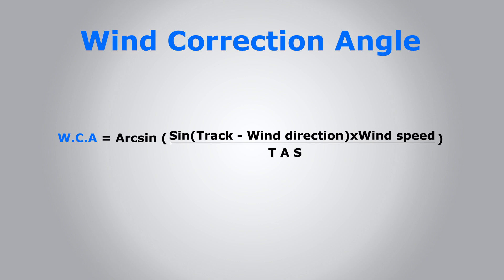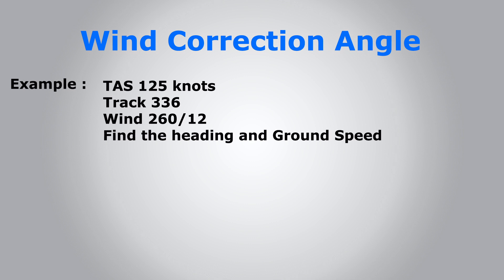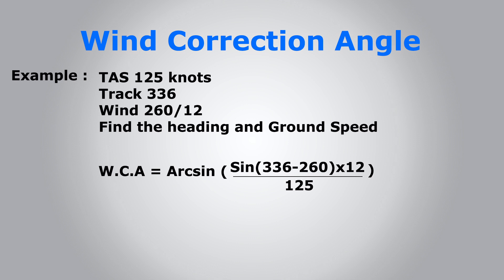All right, this is an example. We have a true airspeed of 125 knots, the track is 336, wind 260/12, and we're asked to find the heading and the ground speed. So first we substitute our givens into the formula and this is what we get. If we apply this into our calculator, we get a wind correction angle of about 5.3 degrees - let's say just 5.